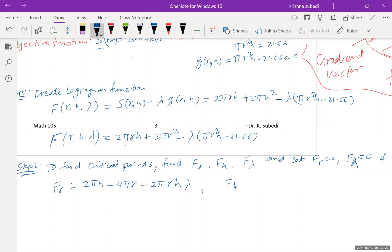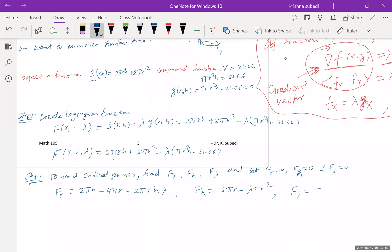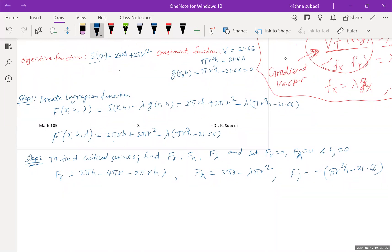Now, let us find F sub h, which is 2 pi r minus lambda pi r square. And then, let us find F sub lambda, that is the easiest one, which will be simply minus pi r square h plus 21.66. And we set them 0. So we set them equal to 0 for the critical number.